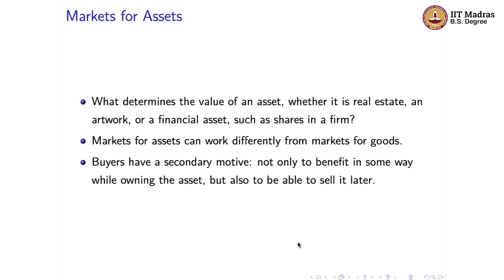One common topic we study in finance is what determines the value of an asset — this often goes by the name of asset pricing. Examples of assets include real estate, a piece of art, or financial assets such as stocks and bonds. The question is: what determines the price of such an asset? Markets for assets are somewhat fundamentally different from markets for other goods. If you buy fruit or vegetables to consume, the objective is simply to figure out the benefit you get from consuming that item. However, in markets for assets, there is also often a secondary motive that buyers have when thinking about whether to purchase an asset.